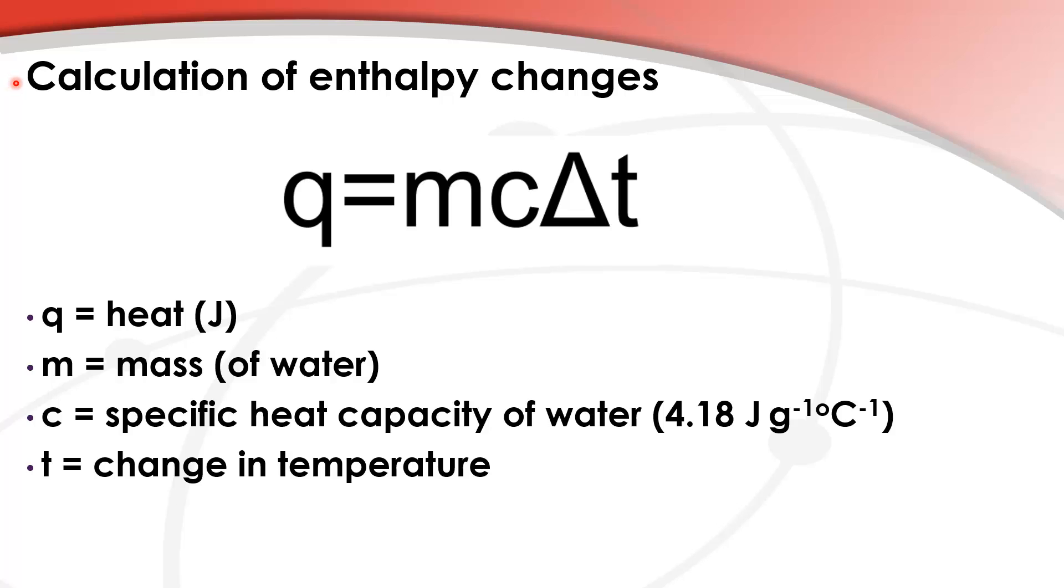Calculation of enthalpy changes. We're going to use this equation here, Q equals mc delta T, to try two different kinds of enthalpy change. Q stands for heat and it's measured in joules. M is the mass, it's usually the mass of the water if we're doing a calorimetry experiment. C is the specific heat capacity of water which is 4.18, and T is the change in temperature.